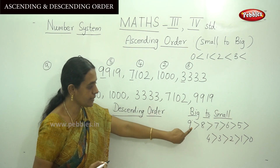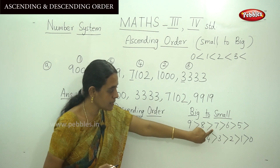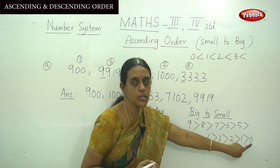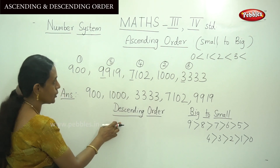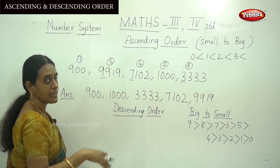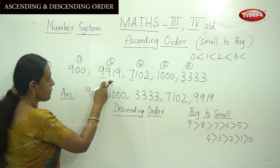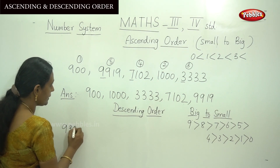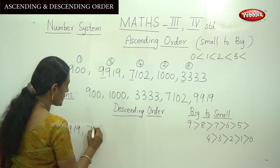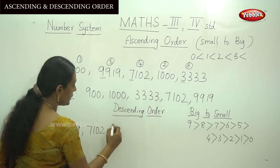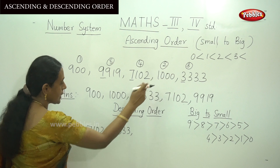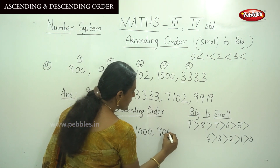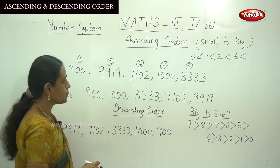So for descending order of the same question, the answer is: 9919 first, then 7102, then 3333, then 1000, and finally 900, because it has only 3 digits and is the smallest number. This is the ascending and descending order of 4-digit numbers.